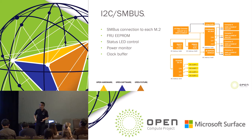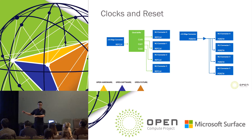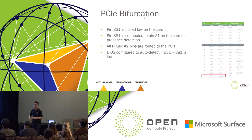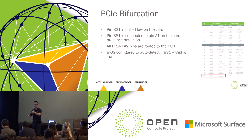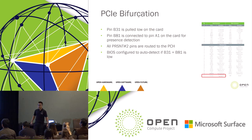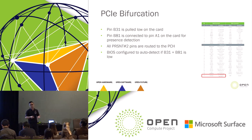We have a clock buffer. For clocks and reset, everything is simply buffered. For PCIe bifurcation, we are PCIe CEM compliant connecting B81 to A1 so it's recognized as a x16 card. In our specific application we allow for auto-detection to bifurcate it into 4x4. We repurpose pin B31 — which is the present-two pin on the card — and pull it low. That allows the PCH to detect that it's an Ava card and bifurcate it into 4x4.